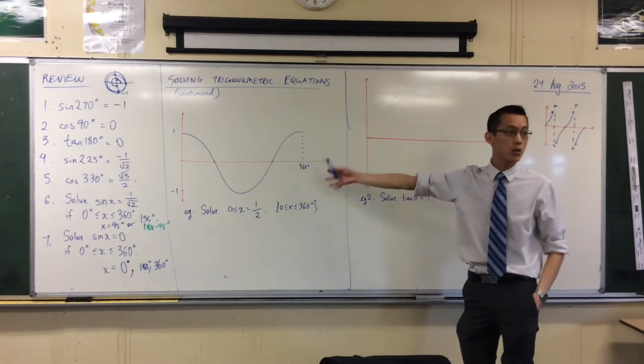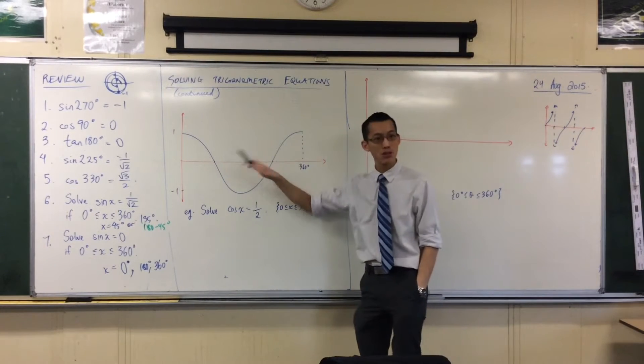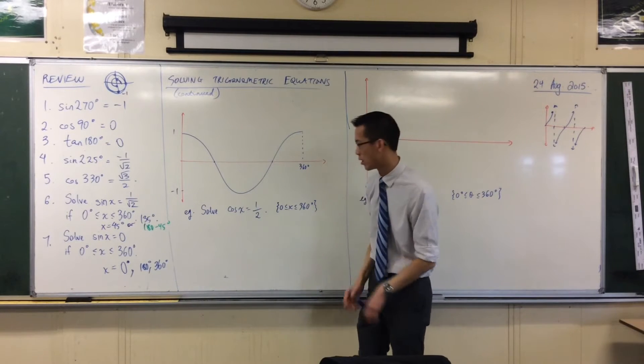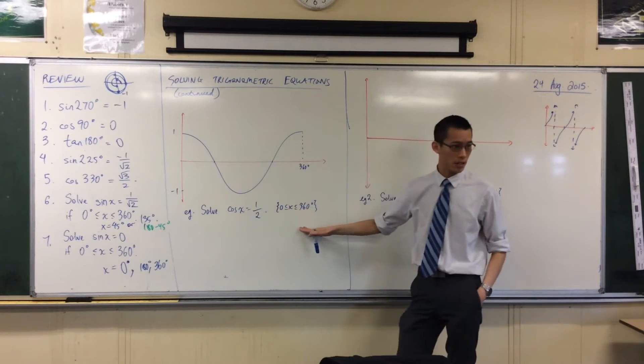So you can see I have my cosine graph here. I'm going to use this. It doesn't have to be beautiful, it just has to be close enough so that I can see what's going on to solve this equation here.